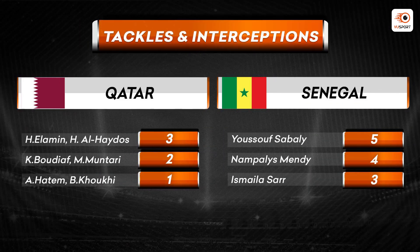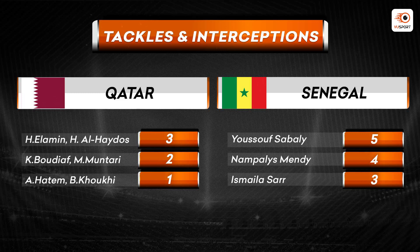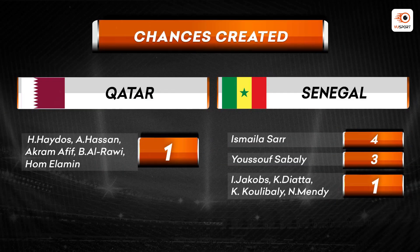Ab dekhte hai kuch crucial stats from the previous game for both teams. Tackles aur interceptions: Qatar mein Al-Ameen aur Al-Haydos ne teen tackles ya interceptions kiye the, Boudiaf aur Mohammed Muntari ke do the, Abdul Hatim aur Khoukhi ke ek the. For Senegal, Yusuf Sabaly ke five tackles and interceptions — he had a great game last time — aur Nampalys Mendy ke four the.